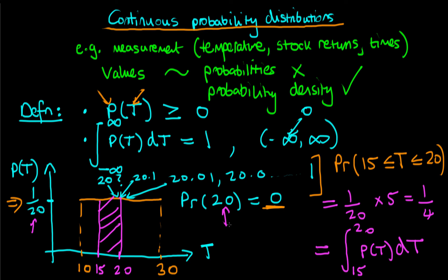To summarize: continuous probability distributions are used to describe variables about which we're uncertain that are measured on some continuous scale. The important thing to remember is that the values of the probability distribution function are not interpretable as probabilities. What we can interpret them as is probability densities, which tell us the concentration of probability along a particular unit of length of our variable — for example, a unit in degrees Celsius when talking about temperature.